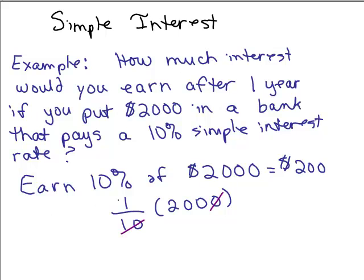So $200 is how much you earn in interest by putting $2,000 in the bank as opposed to under your mattress. So how much money is now in the account?